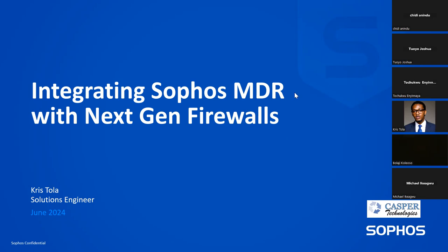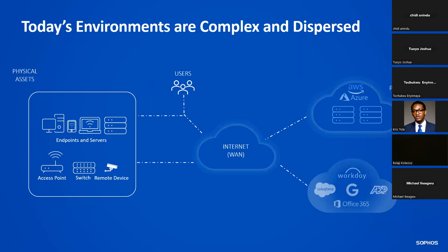You might have heard a lot about MDR over the past couple of months, but MDR is nothing if you don't get the visibility that is required. MDR is more like a SOC — a security operation center. In a normal SOC, you have firewalls, switches, routers, endpoints, and EDR, all sending their telemetry into a SIEM solution — the dashboard that shows what's happening across all security layers. We're talking about integrating your firewall with a SOC MDR solution, specifically third-party firewalls.